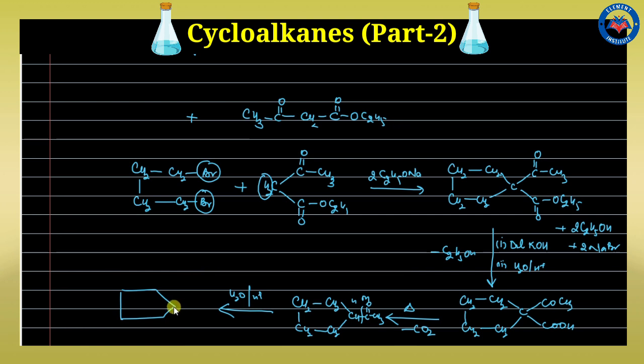These are the preparation methods of cycloalkanes in which we have used calcium and barium salts, dihalides, diesters, and dicarboxylic salts. In our next lecture, we will discuss the physical and chemical properties of cycloalkanes and how we can convert cycloalkanes using different suitable reagents.